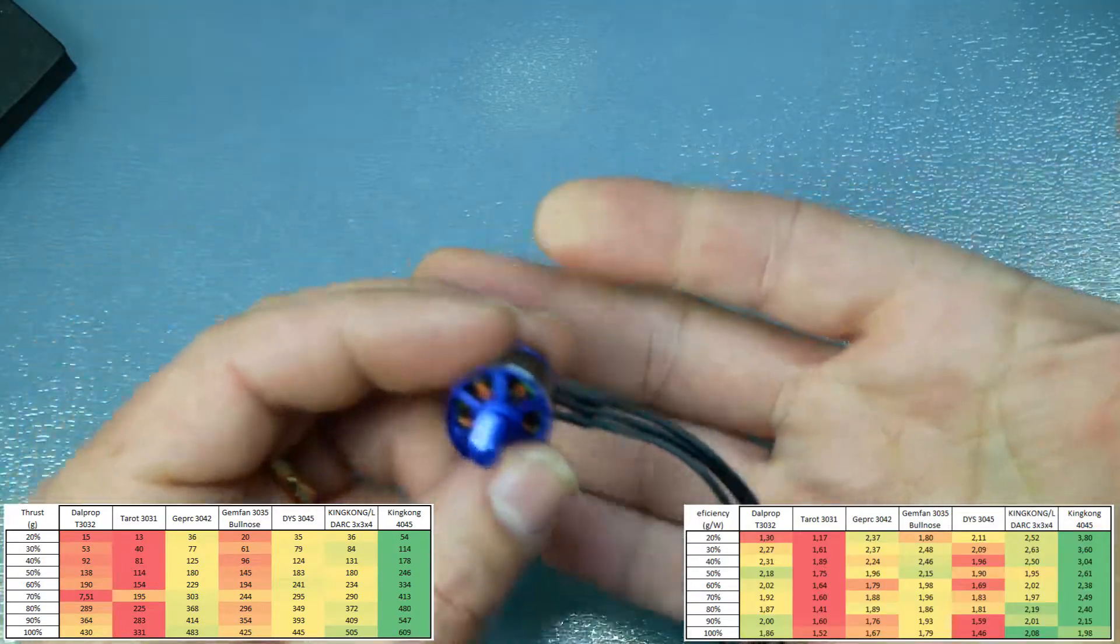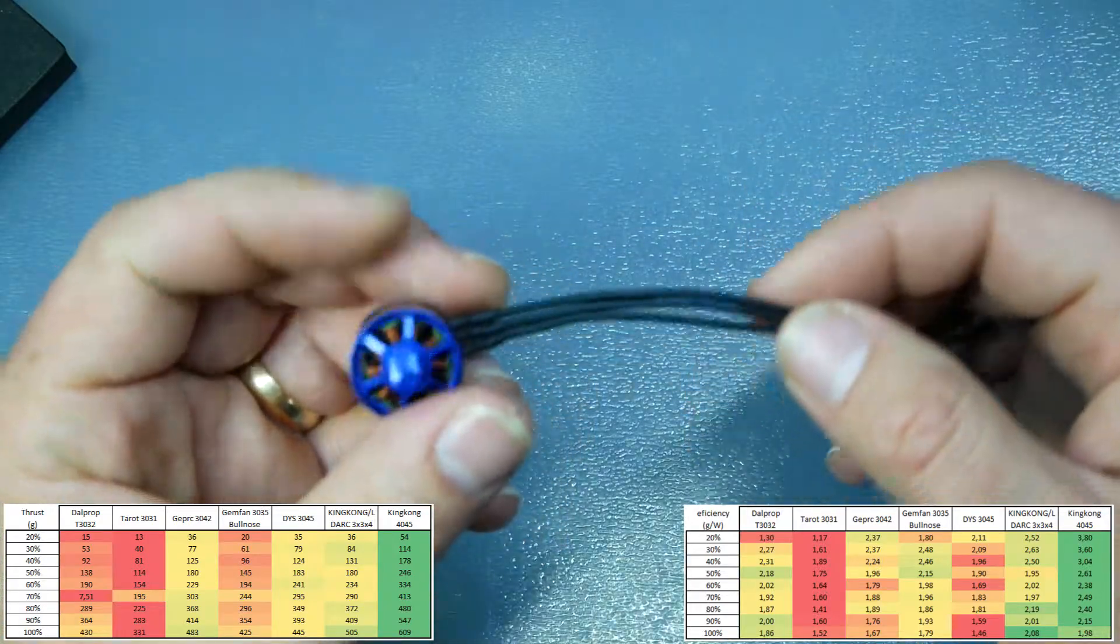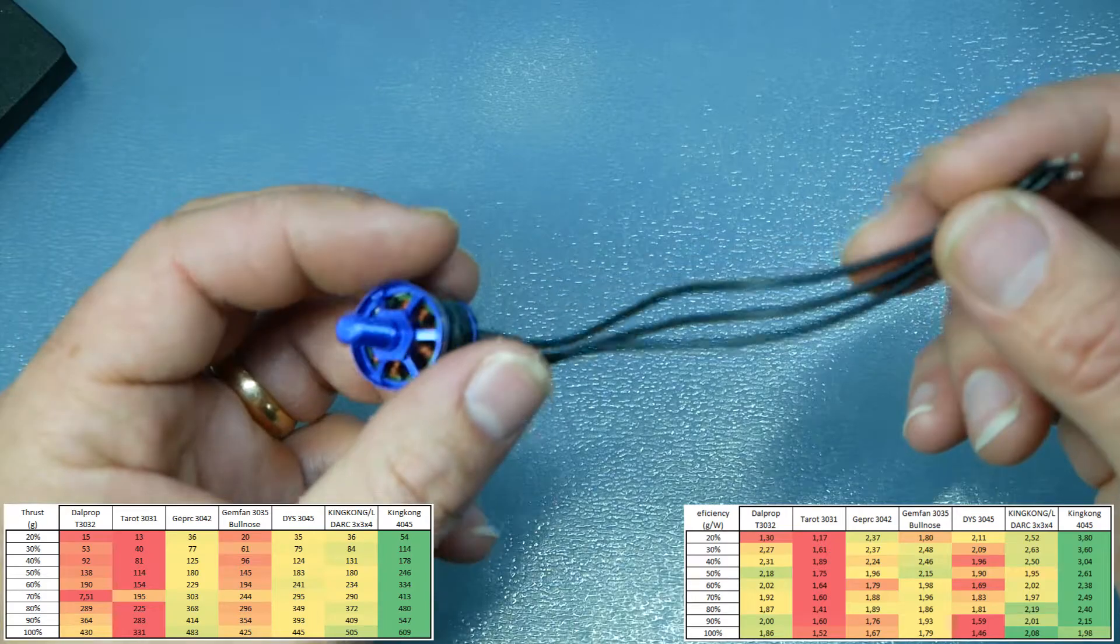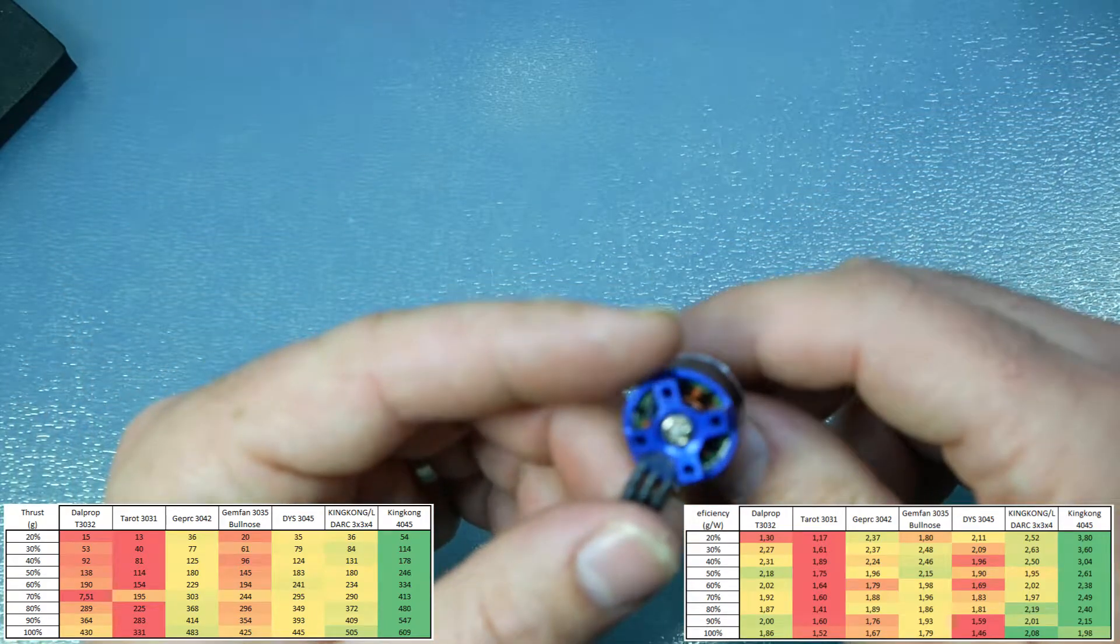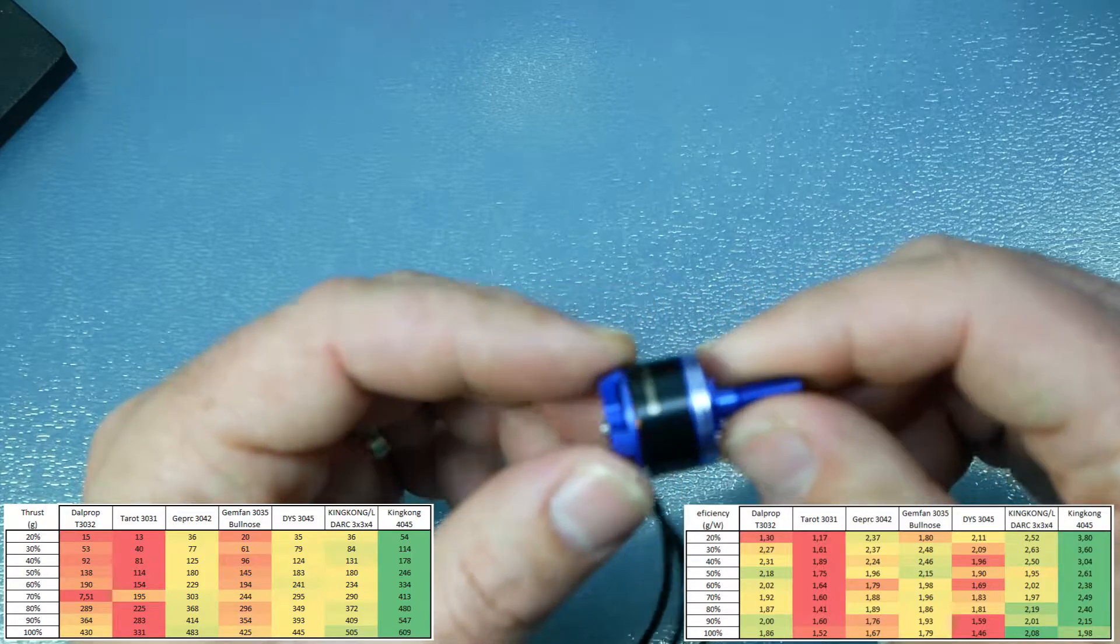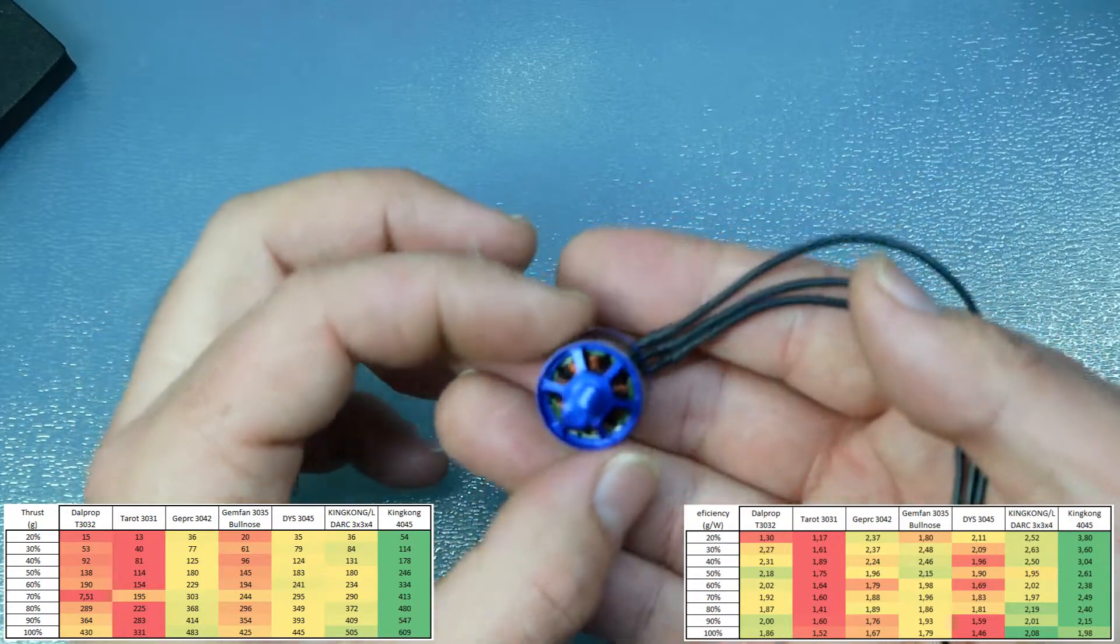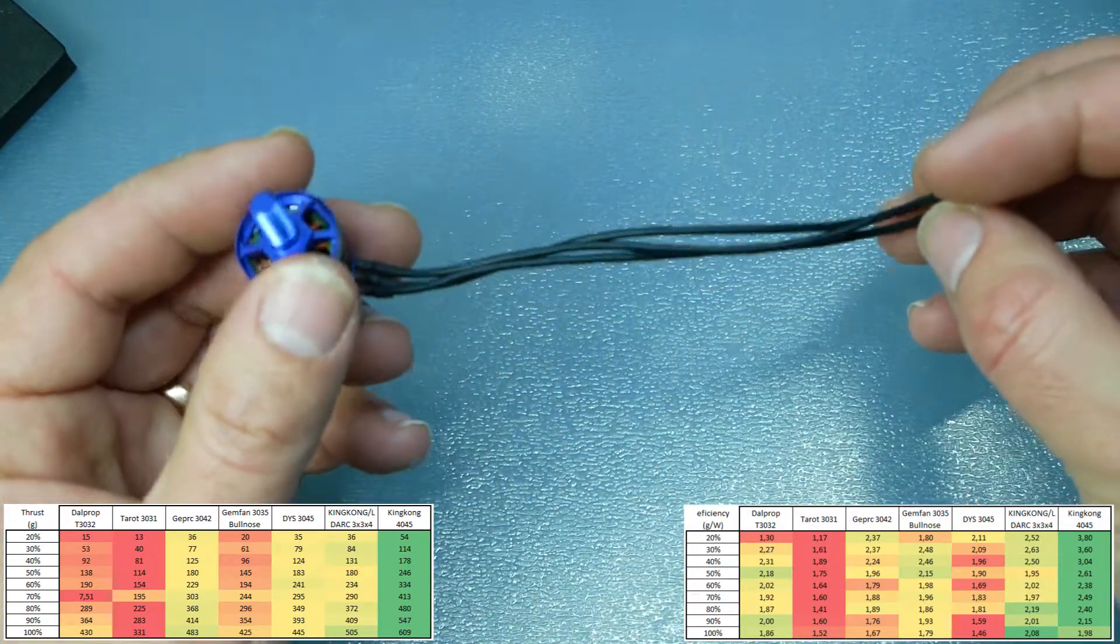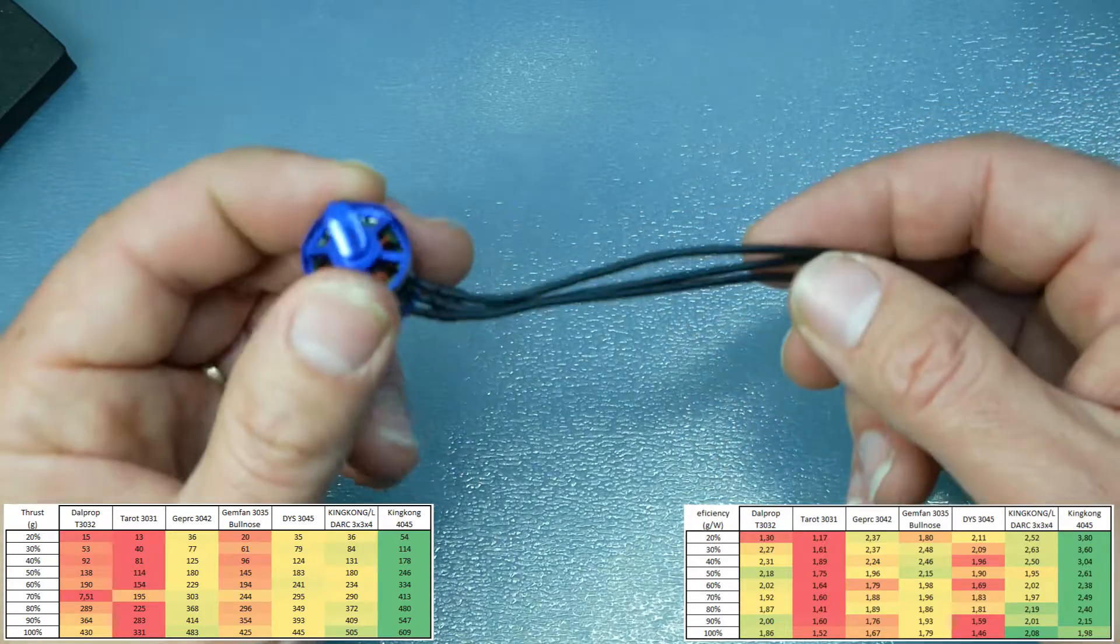The wires have almost 110mm, so it must fit all builds with all-in-one ESCs. This motor is more suitable for 3 or 4-inch builds, so the wire length should fit all these kind of frames.